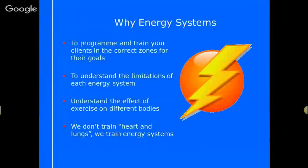So why do we even need to look at energy systems? Energy systems at level two are really important because here you're going to understand how you can program and train your clients in correct zones. Those zones are going to help you achieve their goals and program so they can actually achieve their goals, which is at the end of the day what we're setting out to do from a fitness perspective. It's really important that we understand the limitations of each energy system because that will affect our programming, our instructing, and what we expect of our clients. It'll help us understand the effect of exercise on different bodies and how everybody's slightly different.